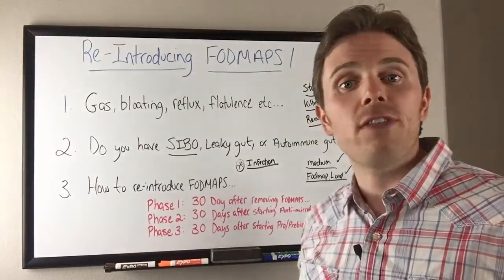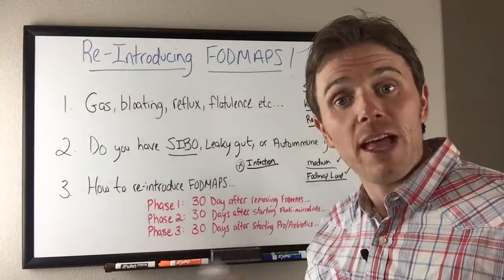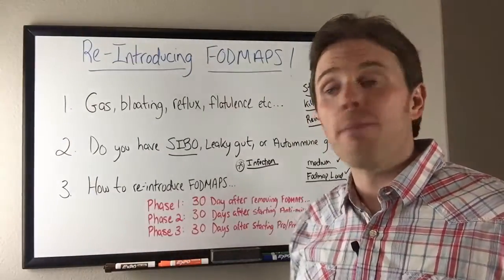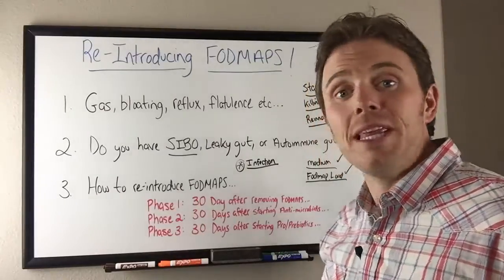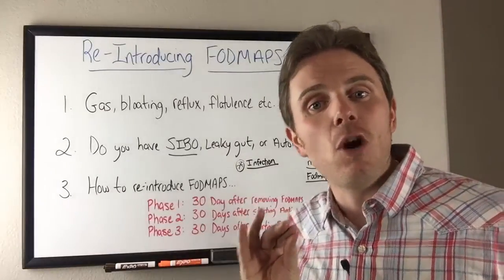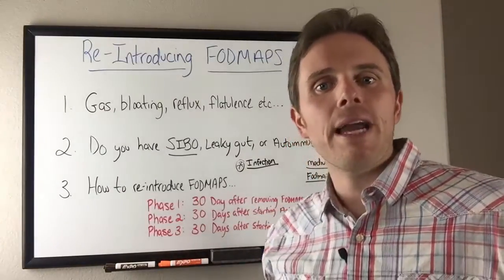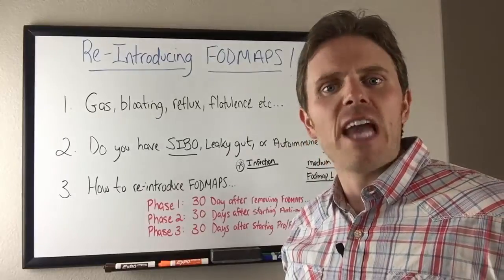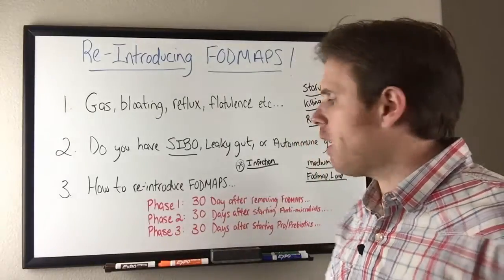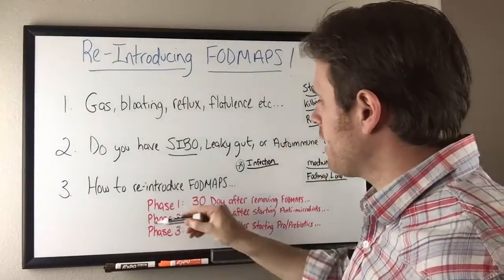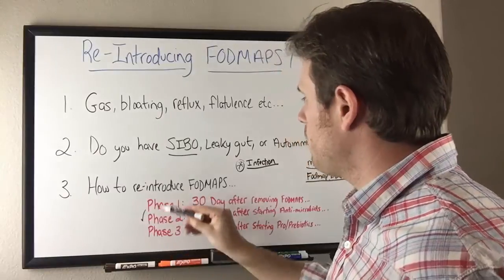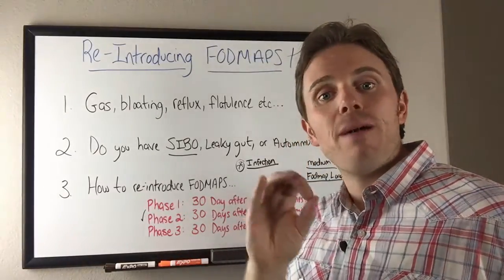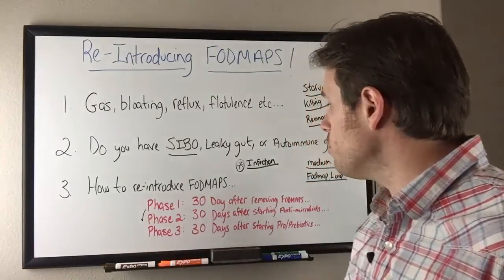Make sure there are no additional FODMAPs added into it. If we don't have a problem with the food, we can add it back into the rotation. If we have a problem with it, we kick it back out and add it back in during phase two. We try during phase one; if not, we put it back on the to-do list for phase two.